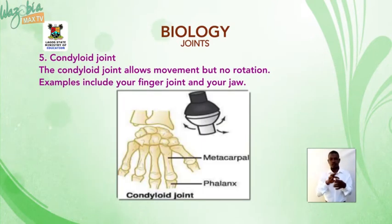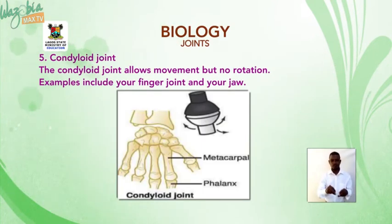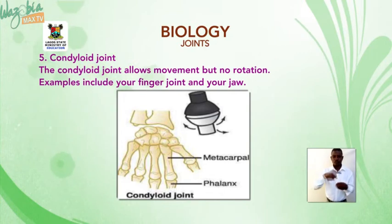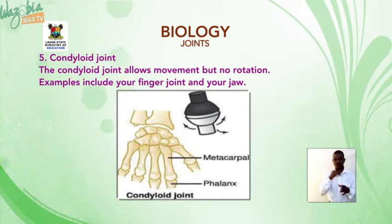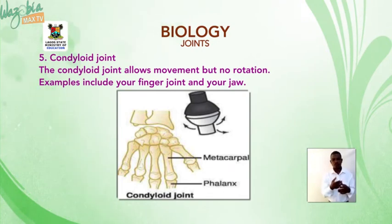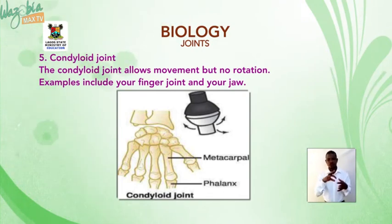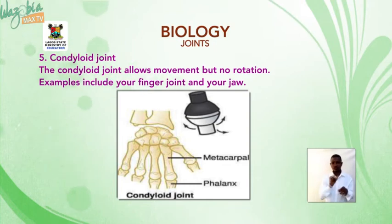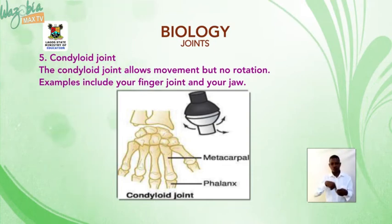Condyloid joint: the condyloid joint allows movement but no rotation. Examples include your finger joints and your jaw.